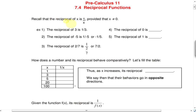Recall that the reciprocal of x is 1 over x, provided that x cannot be equal to 0. That's because you would have undefined if 0 were in the denominator.